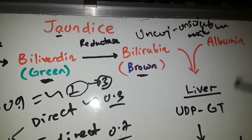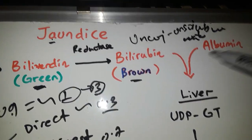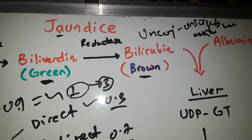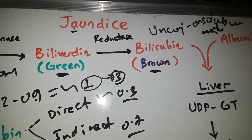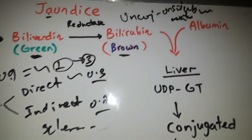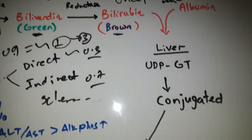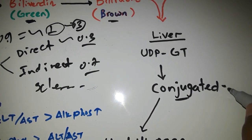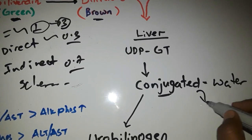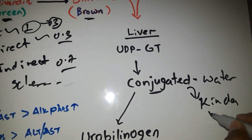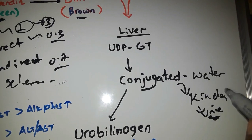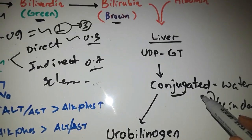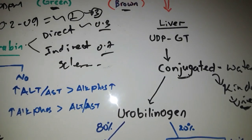Unconjugated bilirubin is transported to the liver where it is lipid-soluble. After conjugation in the liver, it becomes conjugated bilirubin, which is water-soluble and can be excreted into the kidney or the urine.